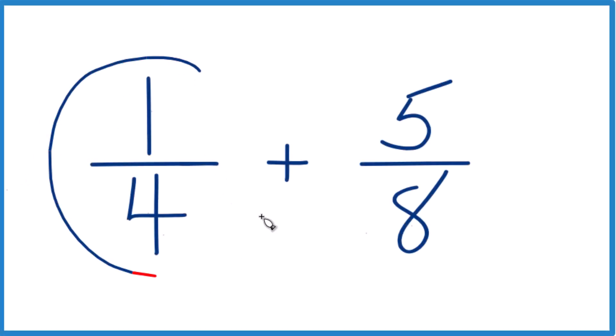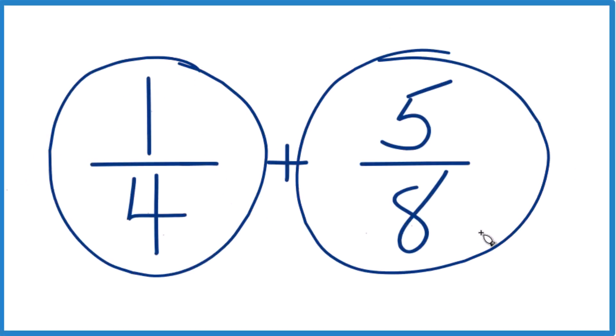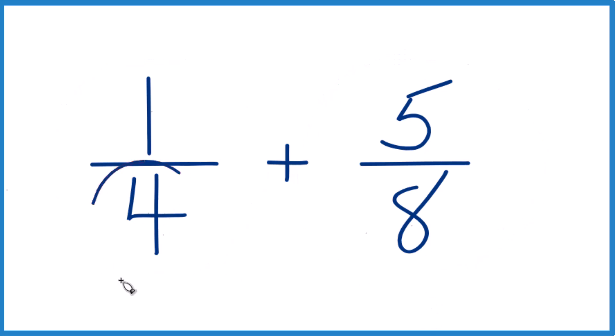All right, here's how you add 1/4 plus 5/8. What we want to do is get our denominator here to be the same, because if we have the same denominator, we just add the numerators and we're done.